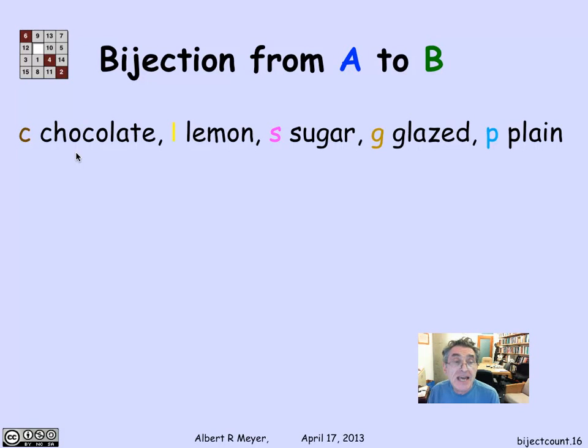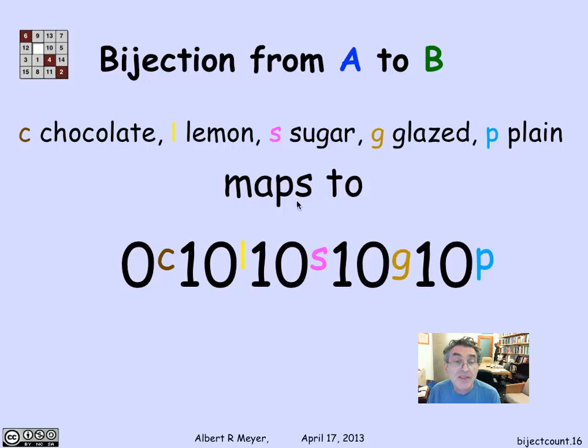So the general bijection, of course, is that if I have a selection of C chocolate donuts, L lemon donuts, S sugar donuts, G glazed, and P plain of any number, really, that a selection of donuts with this number of chocolates, lemons, glazed, plain corresponds to a binary word with C plus L plus S plus G plus P zeros and four ones.